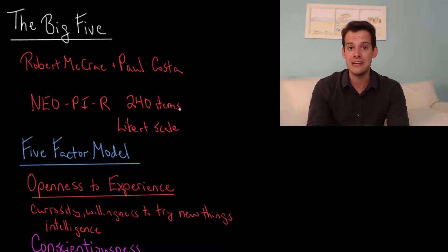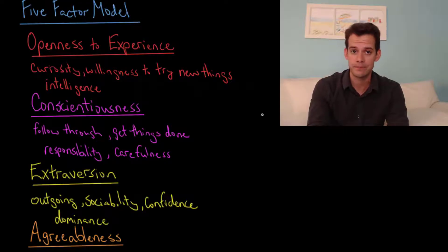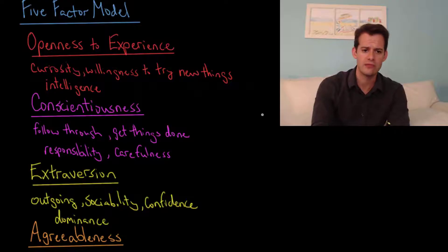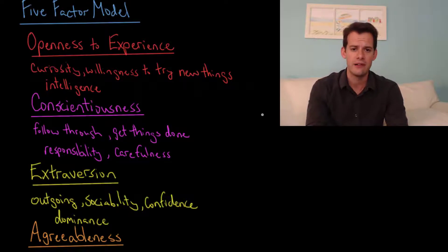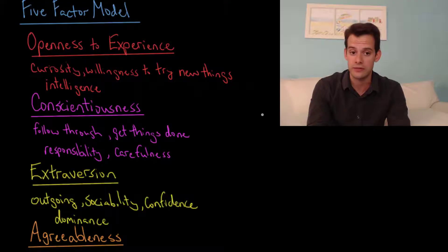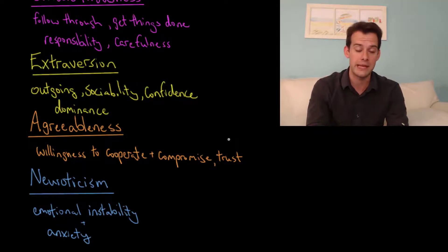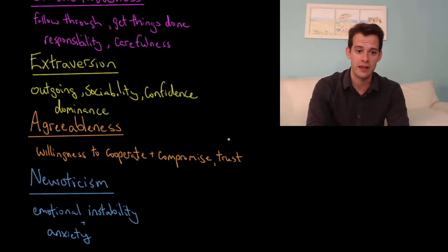The five factors are: openness to experience, which refers to someone's curiosity, willingness to try new things, and may even be related to intelligence; conscientiousness, which refers to a person's tendency to follow through, get things done, feel a sense of responsibility, and have a higher level of carefulness; extroversion, referring to how outgoing someone is, their sociability, confidence, or social dominance; and agreeableness, referring to someone's willingness to cooperate and compromise, including their sense of loyalty, trust in others, and desire to maintain good social relationships.